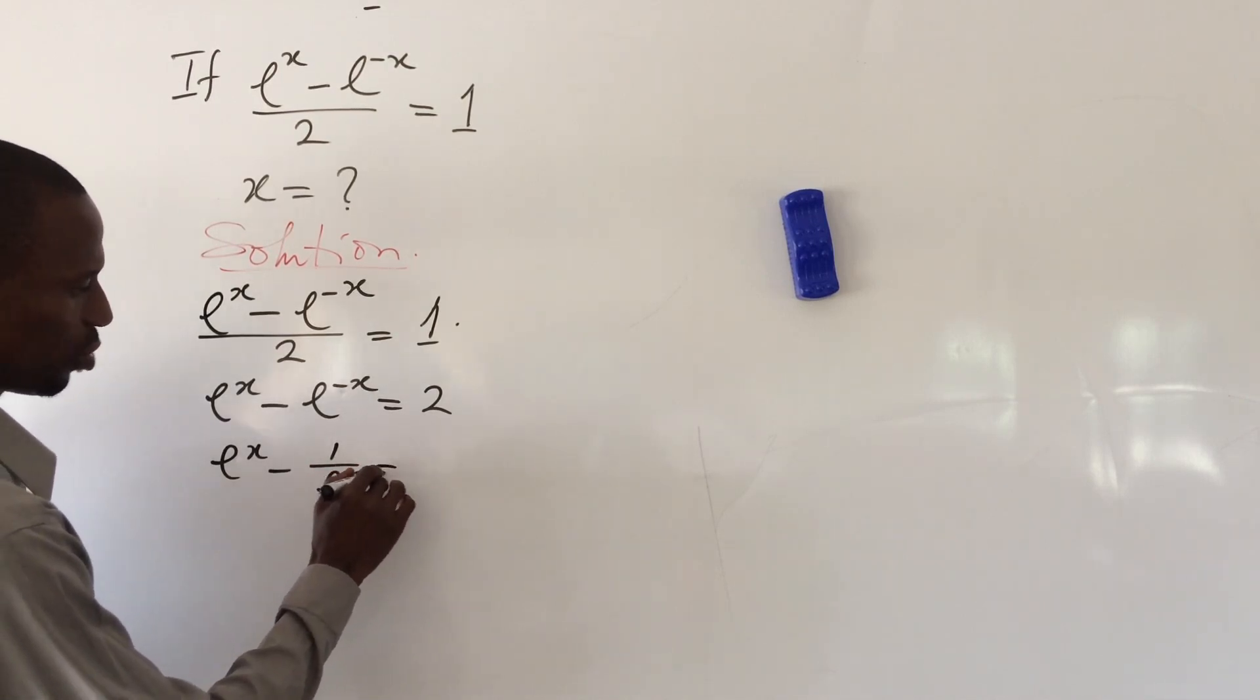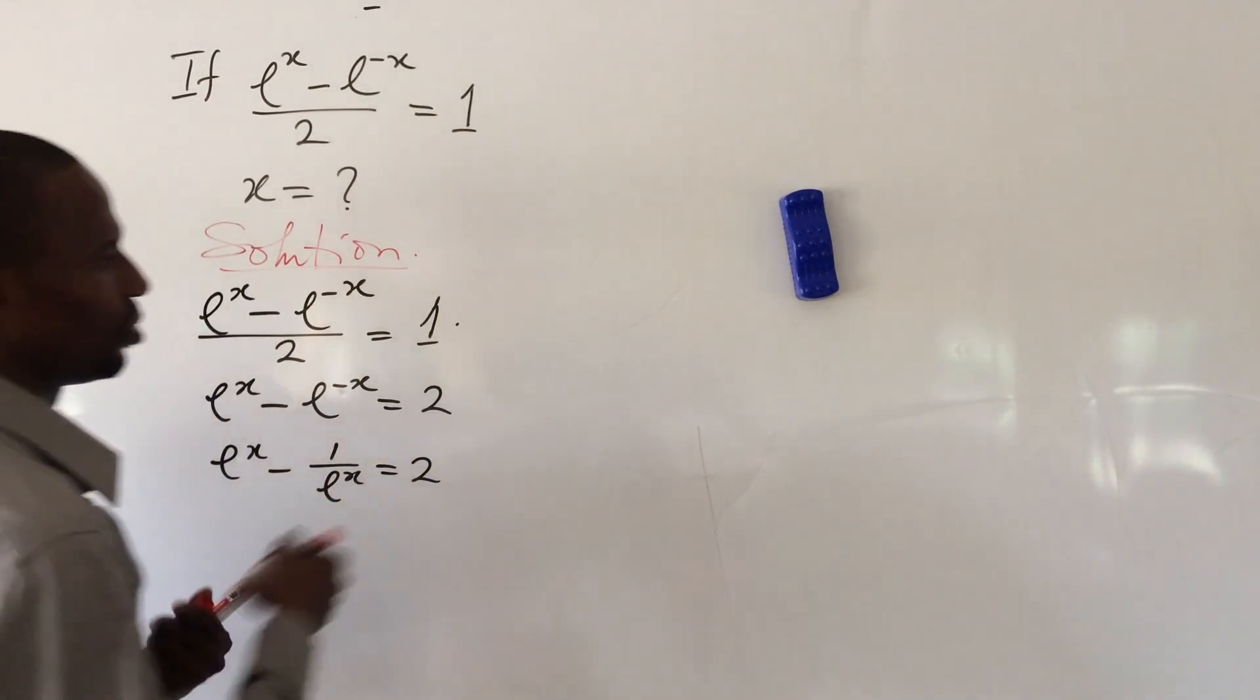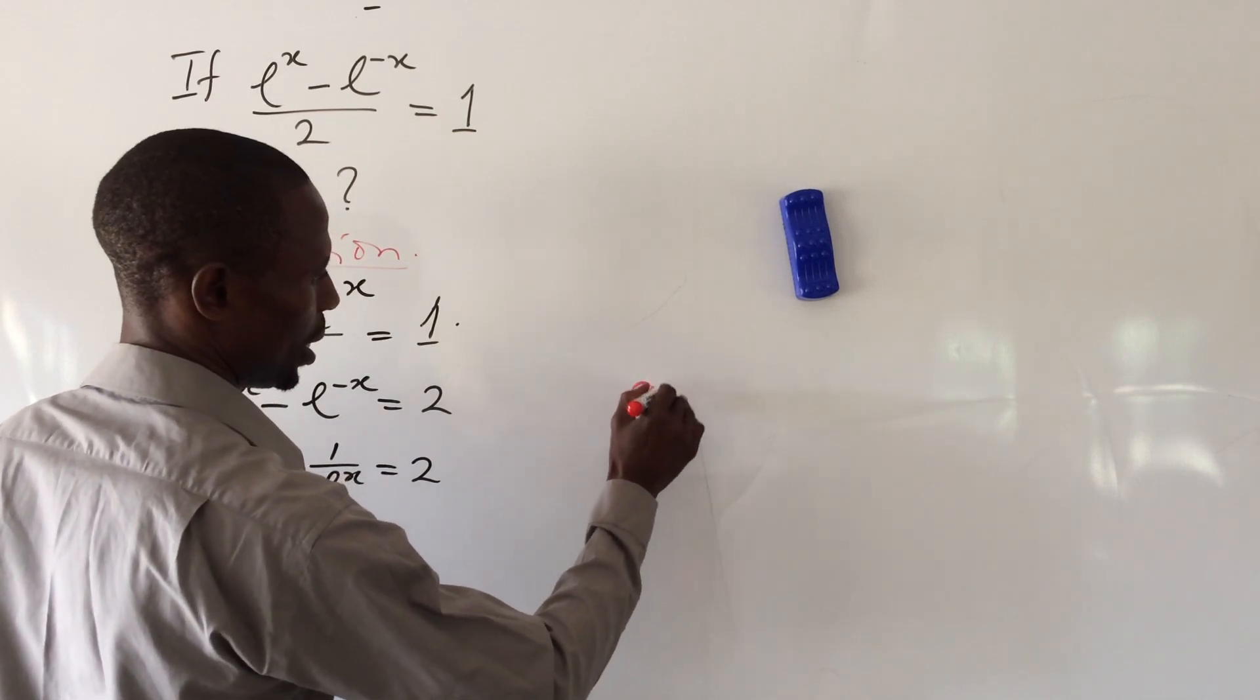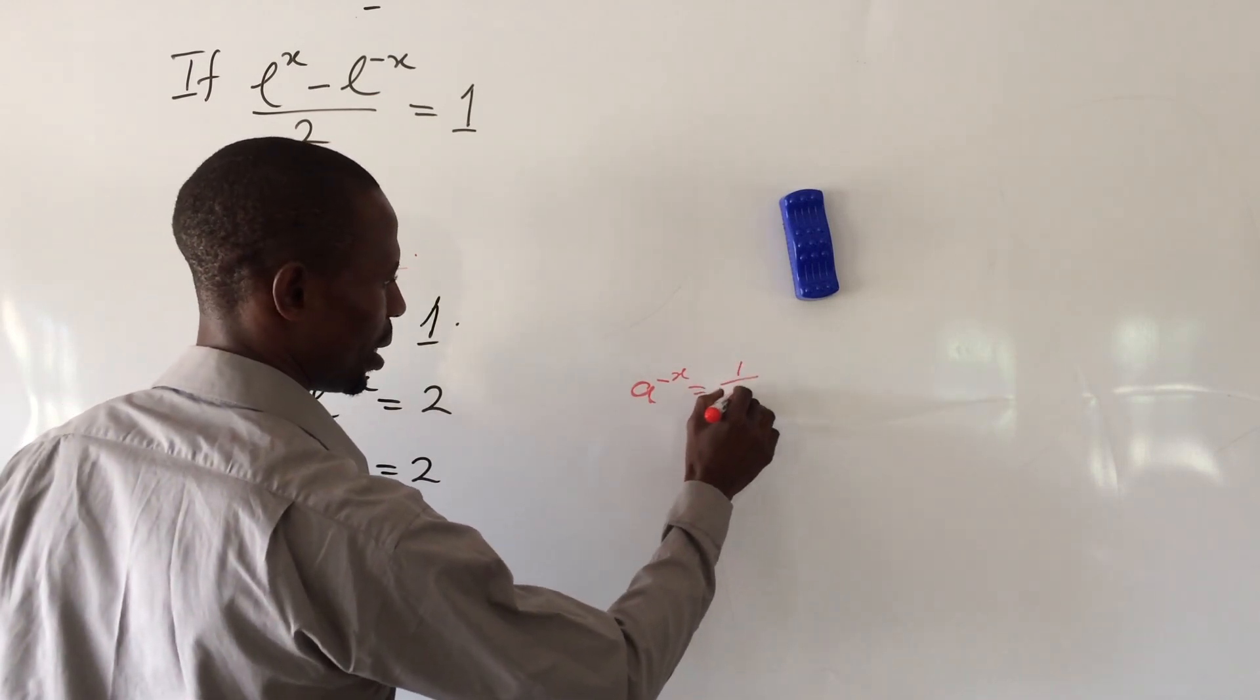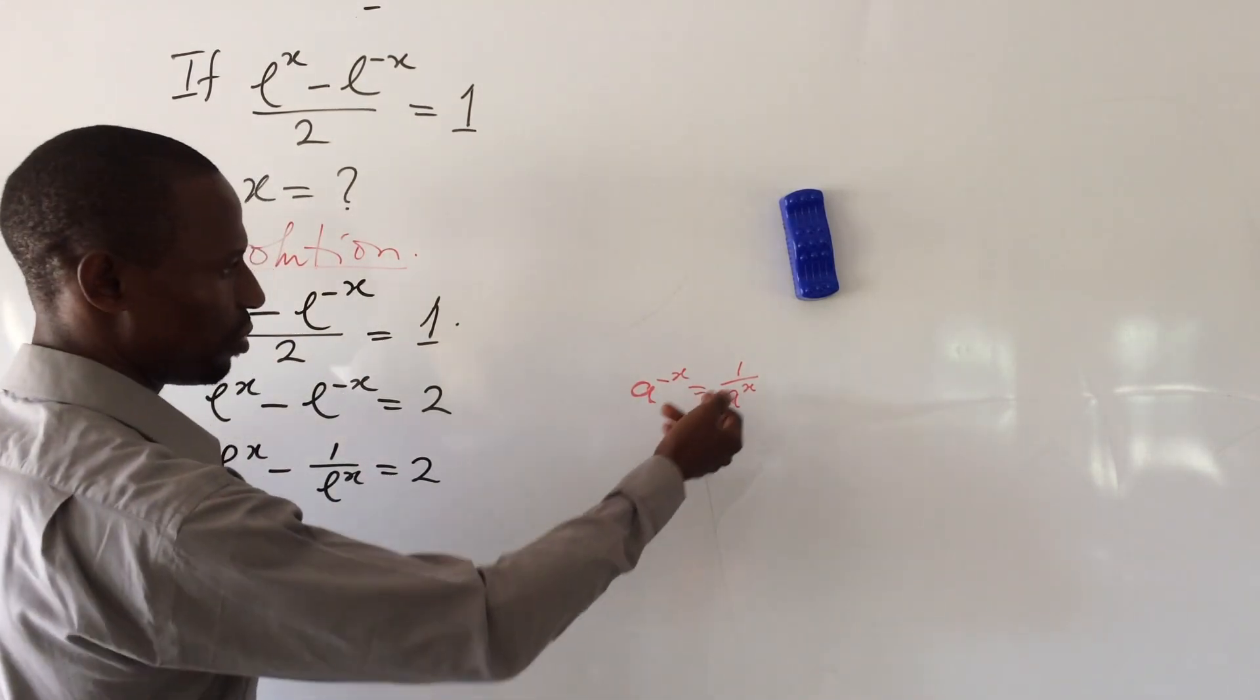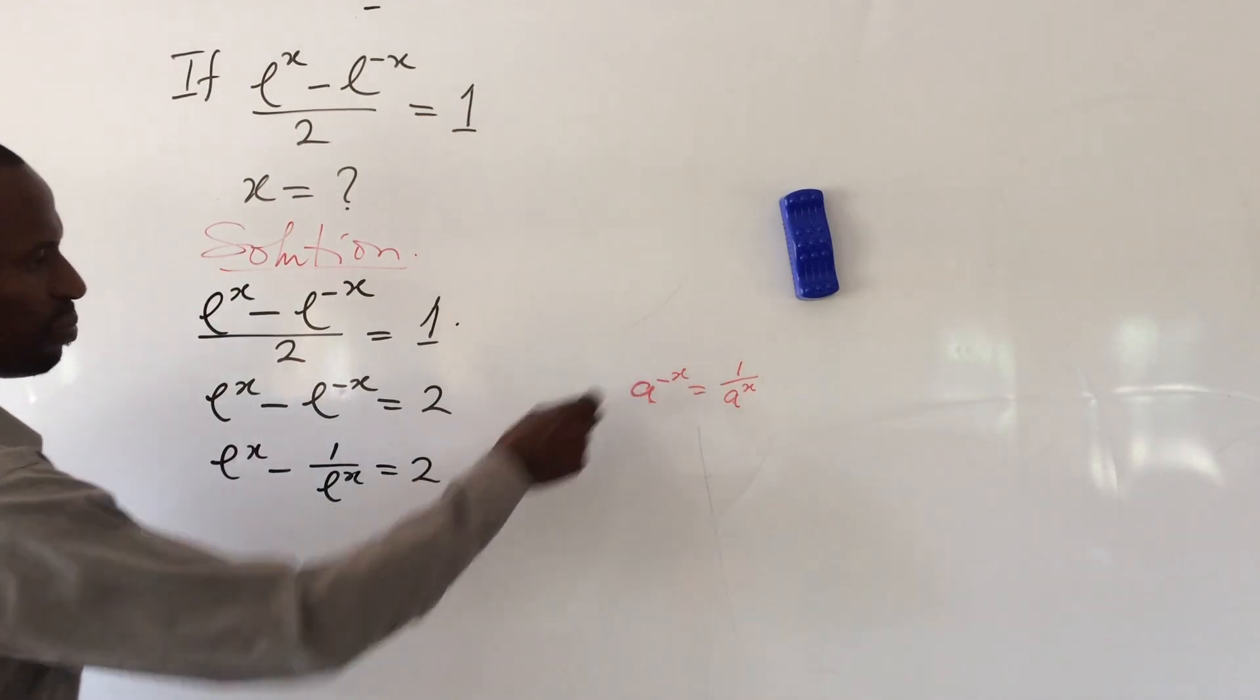From the law of indices, a^(-x) is the same thing as 1 over a^x. The introduction of 1 and a divisional sign takes care of the negative power.